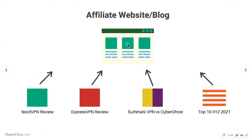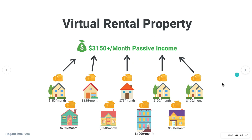Think of your website like having separate pages for different products and reviews — each page is like a little rental property. Each product you promote may have a different commission rate and different search volume, giving different numbers of visitors. It's like a virtual rental property — it's going to take time to build up. It's not a get-rich-quick thing at all, but I'm going to show you step by step how to actually do it.